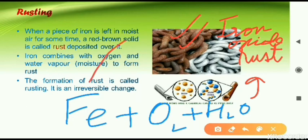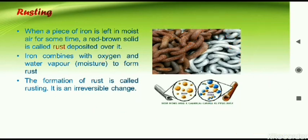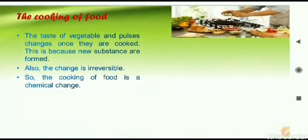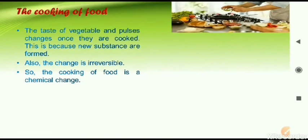Rust is a new product — a new substance formed from iron. We are getting iron oxide from iron, and from iron oxide we cannot get iron back again. If rusting has taken place, the change is irreversible. Both conditions of chemical change are fulfilled: new substances form and the change is irreversible. That is why rusting is a chemical change.